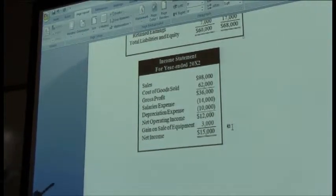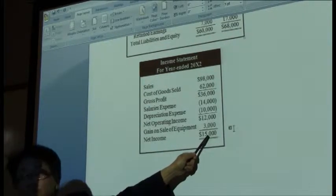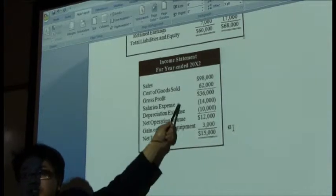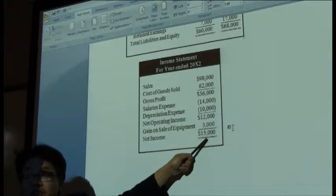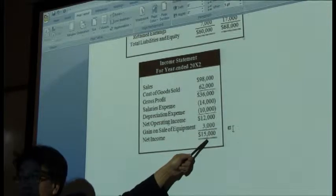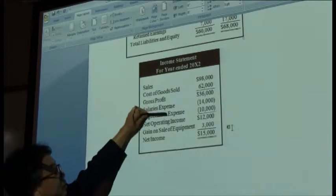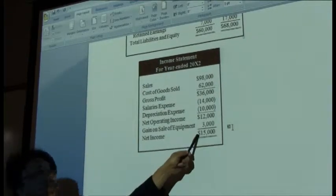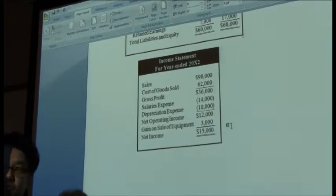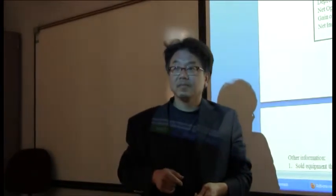So $15,000 on the figure, but please pay attention — it's $15,000 including depreciation expense of $10,000. So $10,000 is part of that $15,000. If you pretended you didn't have $10,000 depreciation expense, what would the figure be? $25,000. Bingo — $25,000.